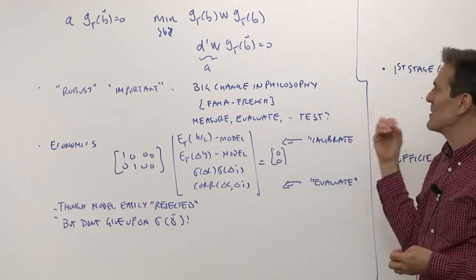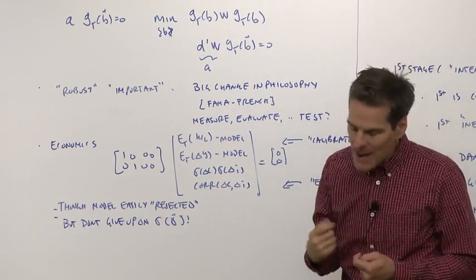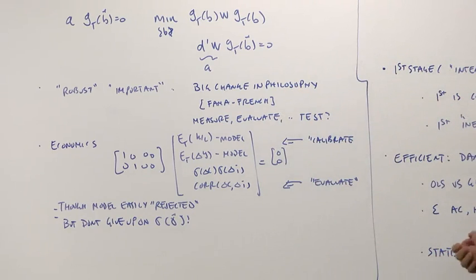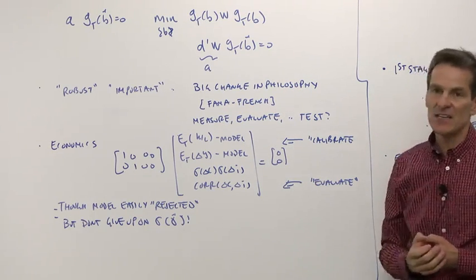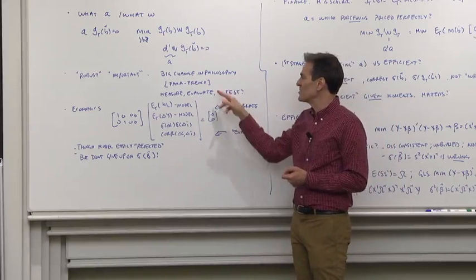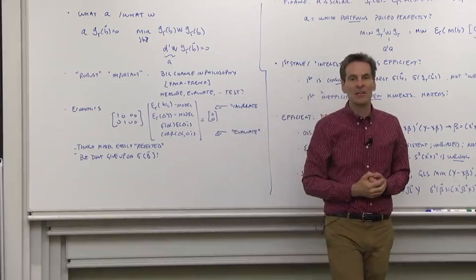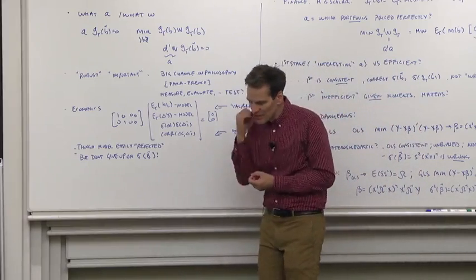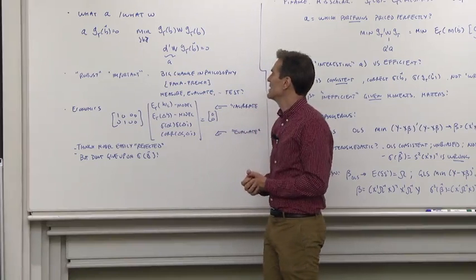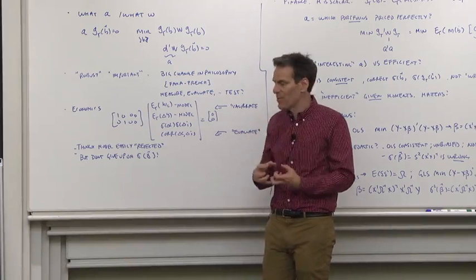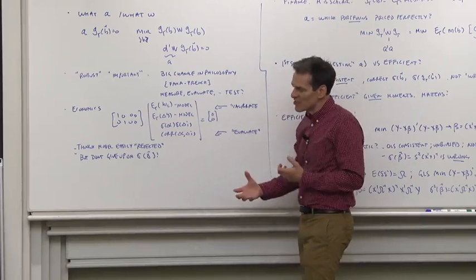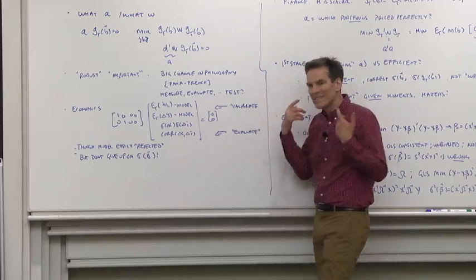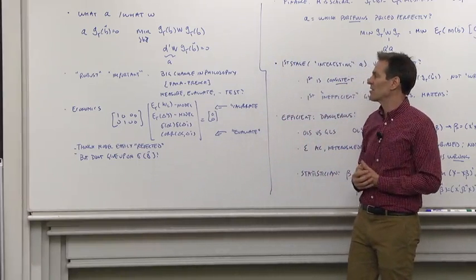This is where GMM shines. It is a tool that has enabled us to do this big change in philosophy that's happened in economics and finance over the last 20 or 30 years. And you saw that in the Fama French paper, that rather than focus on testing a model, on thinking it's perfectly 100% true in testing it, rather than focus on very formal methods, what we do is we measure models, we evaluate models, we see how well they fit the data, while still being sensitive to sampling error questions.